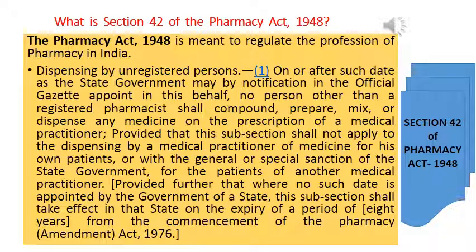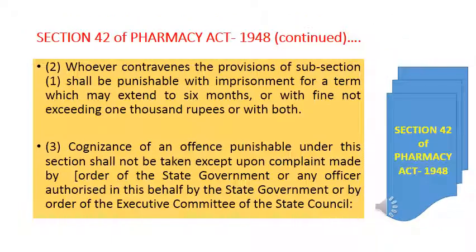This subsection shall not apply to the dispensing by a medical practitioner of medicine for his own patients, or with the general or special sanction of the state government, for the patients of other medical practitioners. The second part of Section 42 describes: whoever contravenes the provision of subsection one shall be punishable with imprisonment for a term which may extend up to six months, or with a fine not exceeding one thousand rupees, or both — that means imprisonment plus a fine of rupees one thousand.